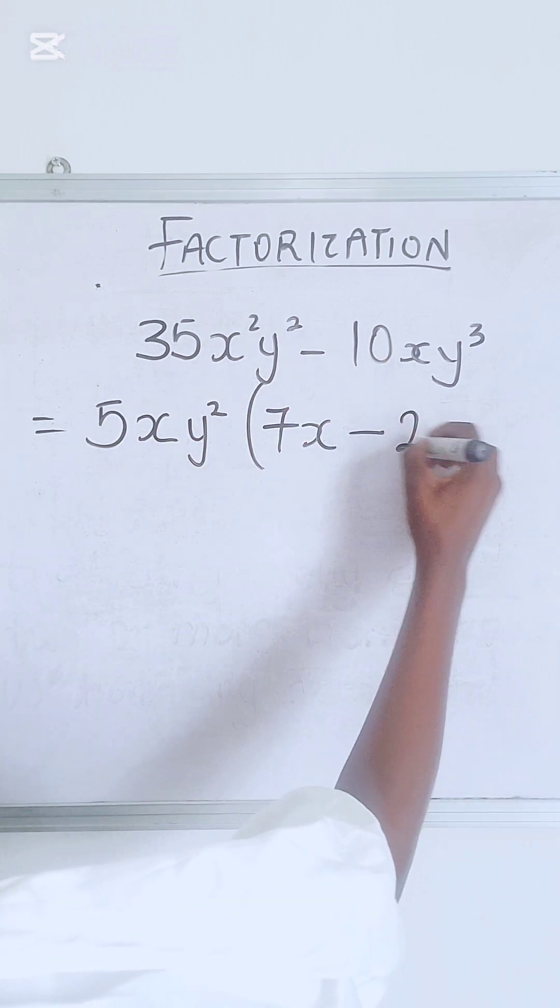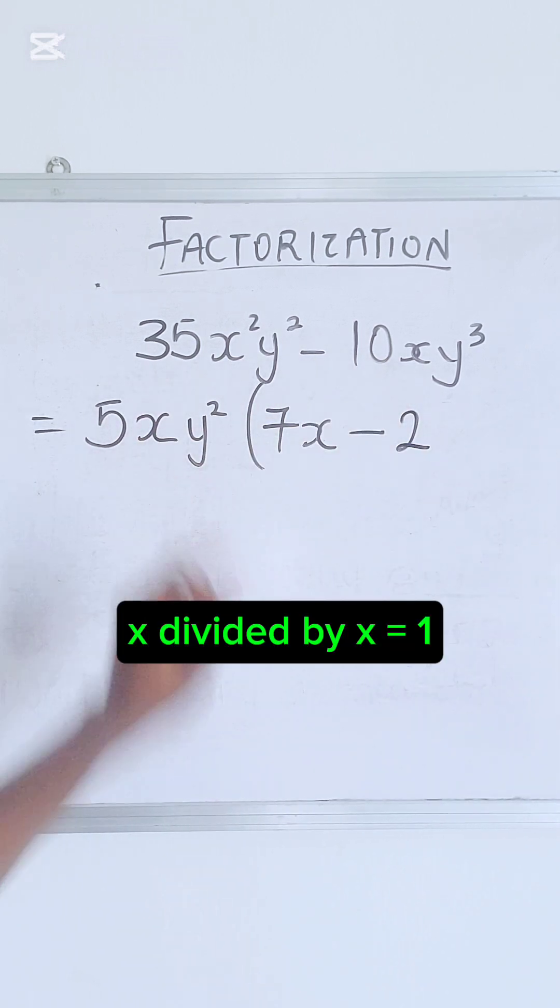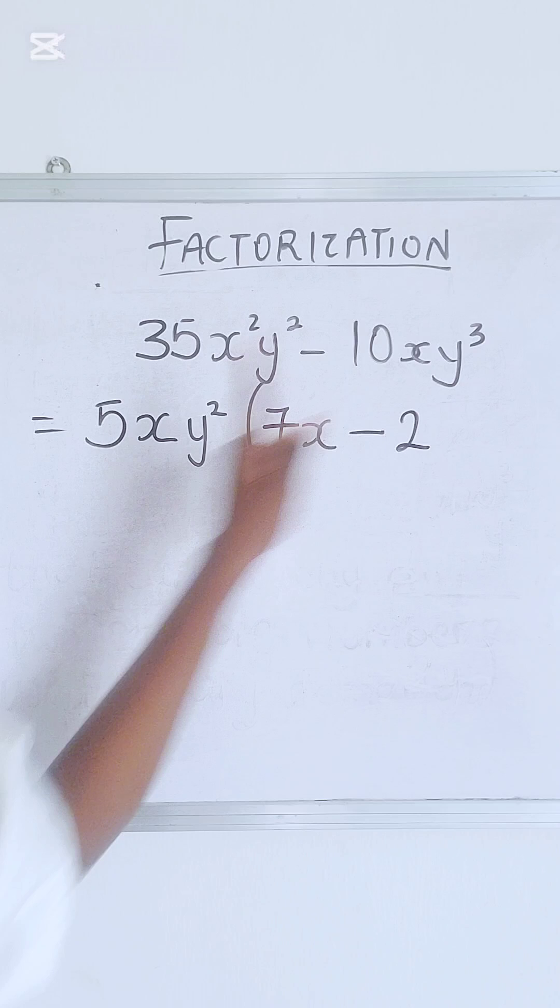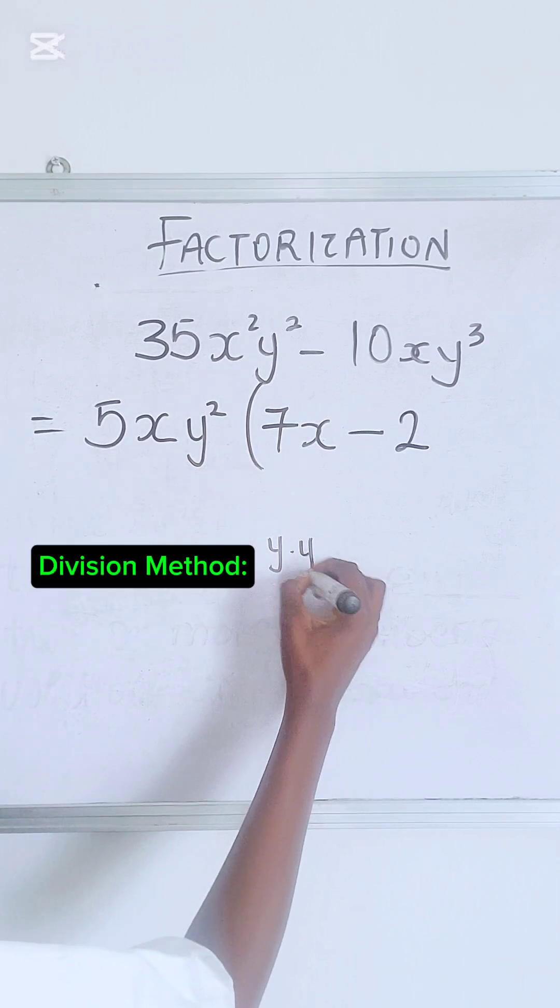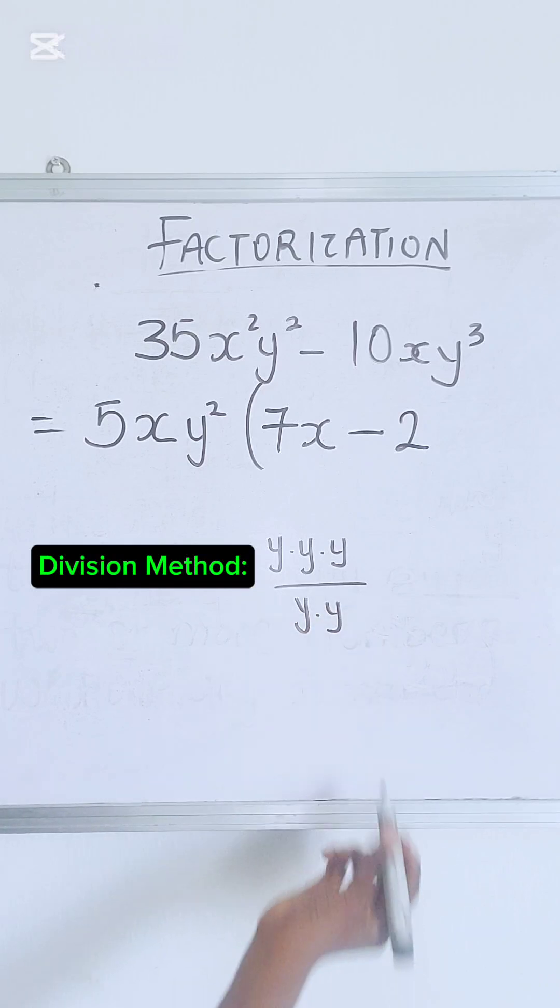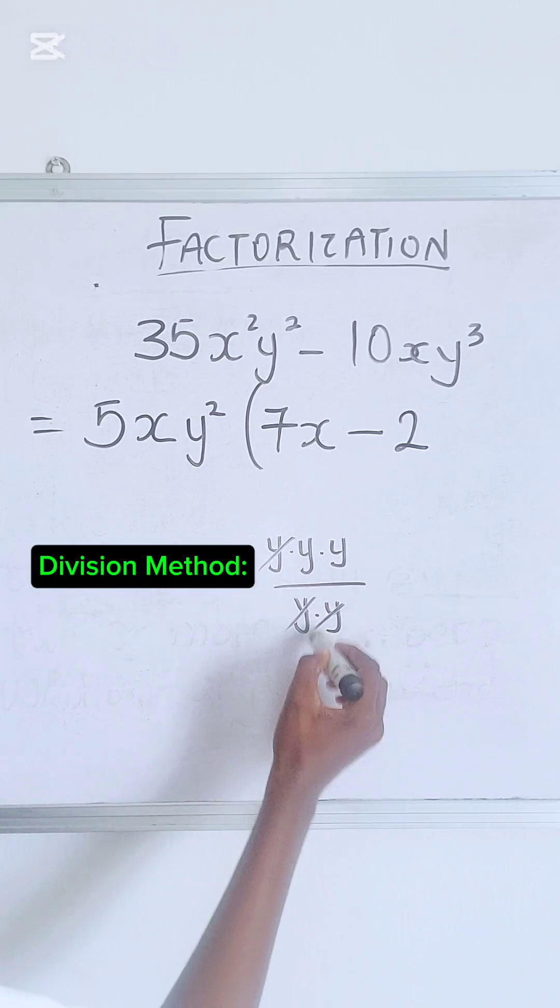10 divided by 5 is 2. X divided by x, that's gone. Y cube divided by y squared, what do they mean? Y cube is y in three places, y square is y in two places. So when this is gone, you are left with just one y.